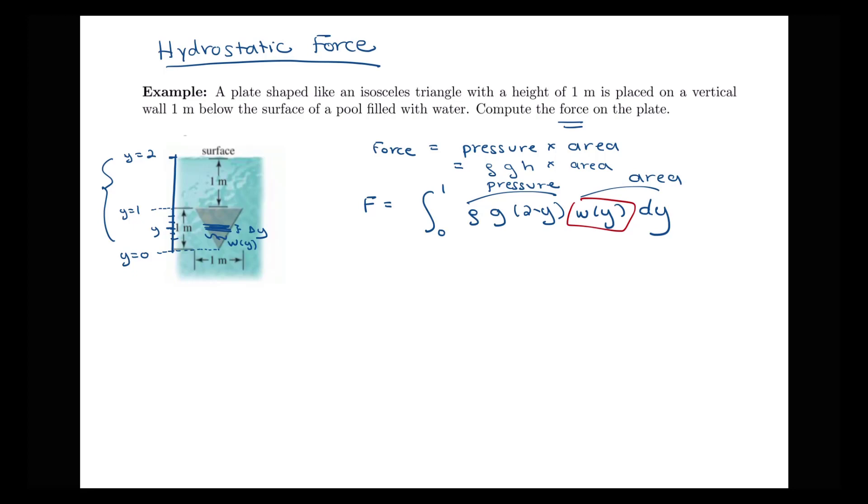So we have two ways that we can go about doing this. We can use some coordinates and figure out an equation for the right half of this plate and an equation for the left half of the plate and do the right curve minus the left curve in order to figure out what the formula for w(y) is, or we can make use of similar triangles.